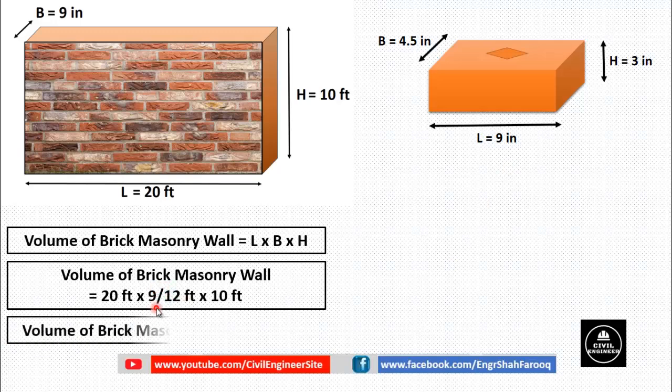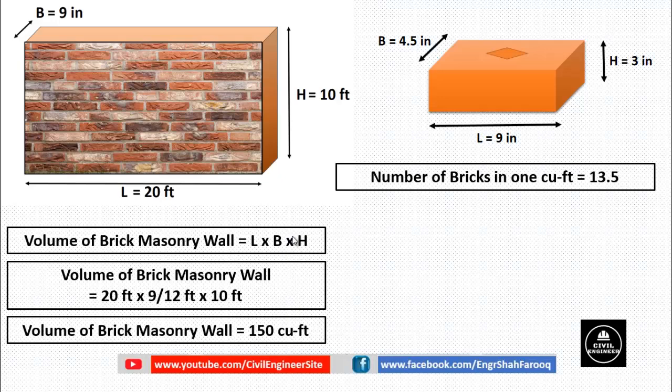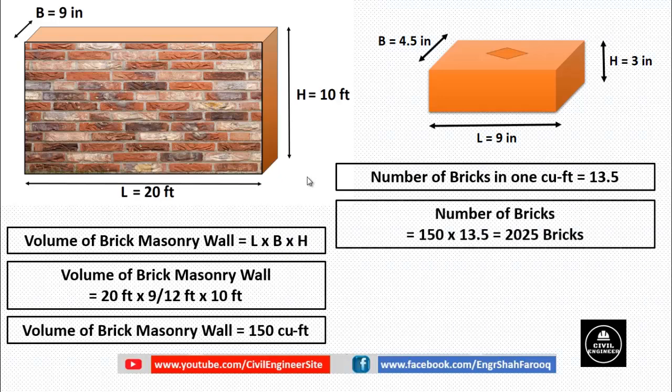By doing simple calculation we will get volume of brick masonry wall is 150 cubic feet. As we know that number of bricks in one cubic foot is 13.5, so number of bricks in 150 cubic feet will be equal to multiplying 150 by 13.5. After doing simple calculation we will get 2025 bricks.